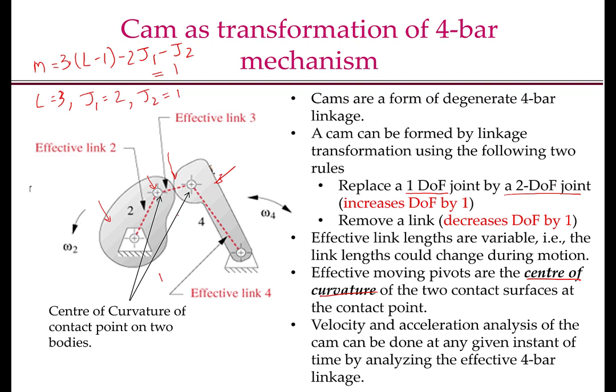This fact that at each instant, a cam is equivalent to a 4-bar mechanism can be utilized for performing velocity and acceleration analysis of the cam as though it were a 4-bar linkage. What you have to do is, given the cam profile and the follower profile and the contact point, you have to find these moving pivots, which can be done mathematically. And then you can use all the equations that you have learned for analyzing 4-bar mechanisms to analyze the kinematics of the cam. In this lecture, we will not focus on that.